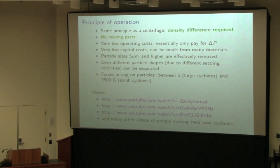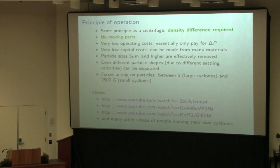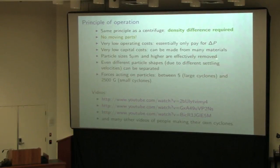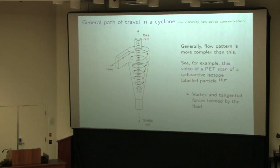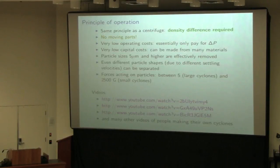The main principle of operation is that we're exploiting the density difference between the solid stream and the carrier fluid stream. The great thing about the cyclone — why it's so widely used — is that there are no moving parts. The operating cost is only related to the pressure difference across the cyclone: the delta P measured from the inlet stream to the gas-out stream. That pressure drop is fairly minimal, about 6 kilopascals, and that's really the only operating cost.